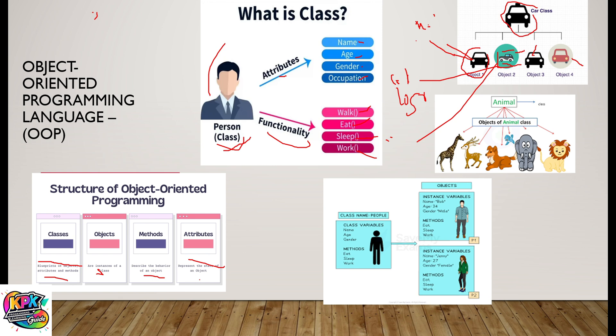Let's look at another example: animal. The term animal could be a class. Then we have instances of animals — that is, objects of the animal class. An object is an instance of a class. So instances of the animal class could be the giraffe, the deer, lions, bears, dogs, and elephants. Any animal can be deemed an instance or an object of the animal class, and all these animals will have what we call attributes — things that help us distinguish them from each other.